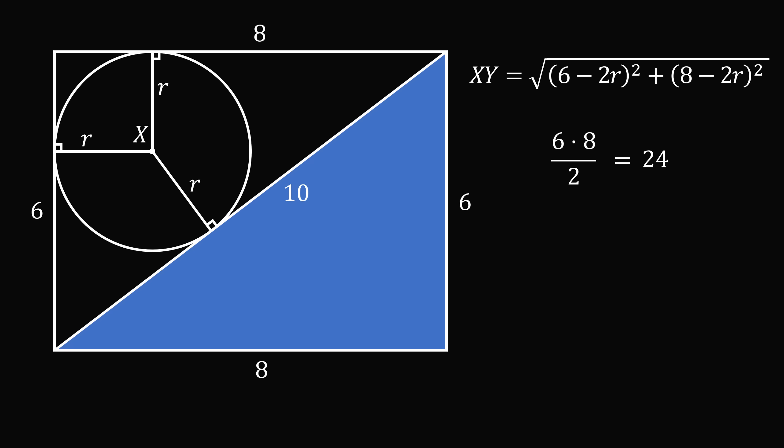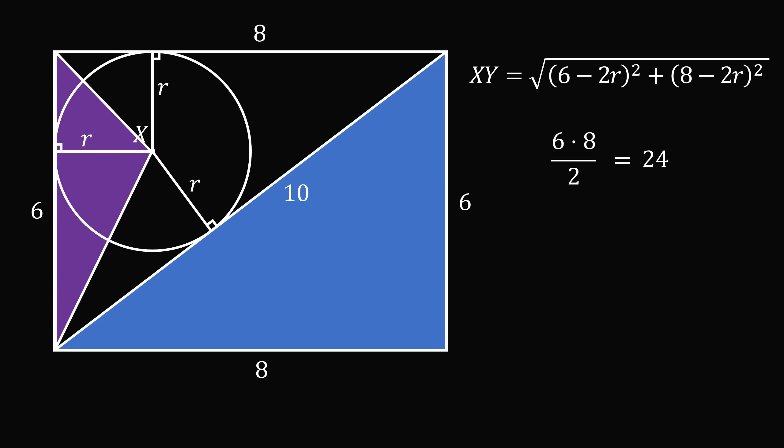We'll now construct three triangles. This triangle has a base equal to 6 and a height equal to R, so its area is 6R over 2.